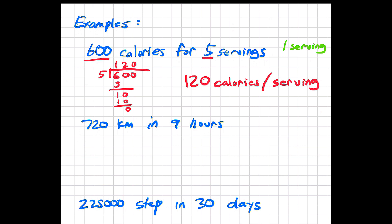The second example: somebody drove 720 kilometers and it took nine hours. So again, we're going to divide the nine into the 720. Nine goes into 72 eight times to be 72, with zero left over. So it's going to end up being 80. The answer is 80 kilometers per hour.